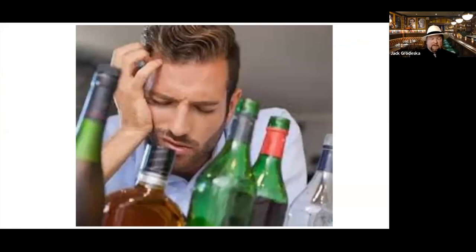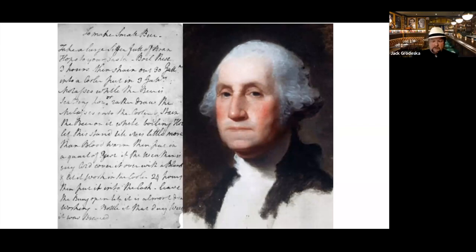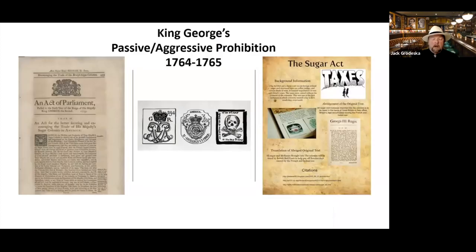On his midnight ride, Paul Revere stopped in a Medford, Massachusetts tavern for a drink of rum. George Washington made beer. In a letter to his friend, his instructions for making a small batch of beer began with, 'First, find a bucket of about 30 gallons and a shovel.' Rum may also have been the real motivation of the Boston Tea Party, as King George had imposed taxes on sugar and molasses, limiting alcohol production.